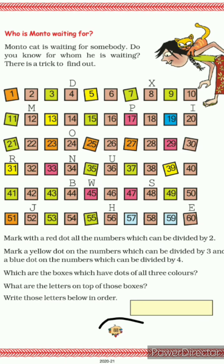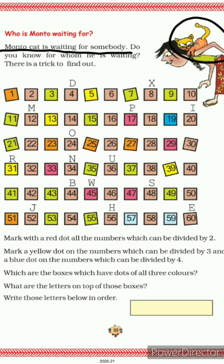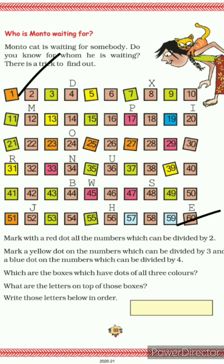Now come to page number 88. The topic is 'Who is Monto Waiting For?' Monto the cat is waiting for someone — do you know for whom? There is a trick to find out. You have numbers 1 to 60, colored in different colors — orange, brown, green, red, blue, etc. Using some hints, you can solve it and find out who Monto is waiting for.